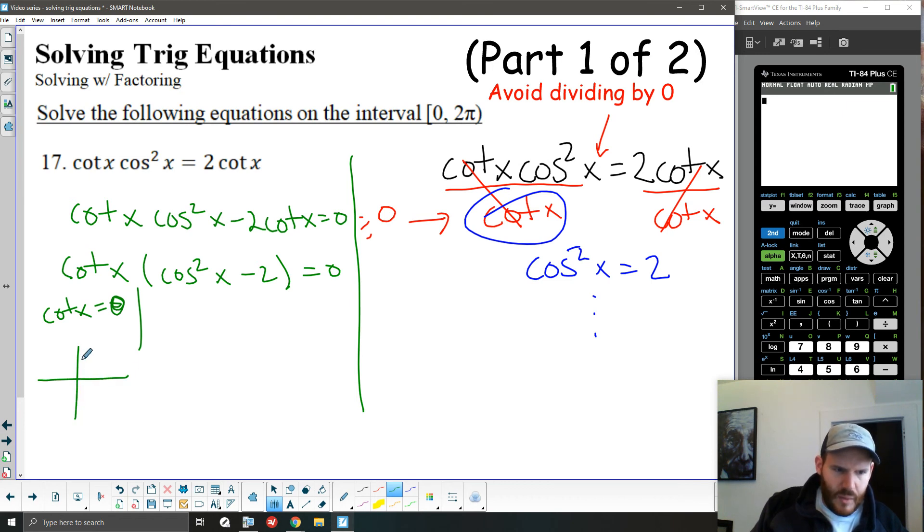And when I go through and solve that, I wind up with cotangent is the reciprocal of tangent, so it's going to be 0 at 90 and 270. Since we're solving in radians here, I'll write that in their radian form. So pi over 2 and 3 pi over 2.